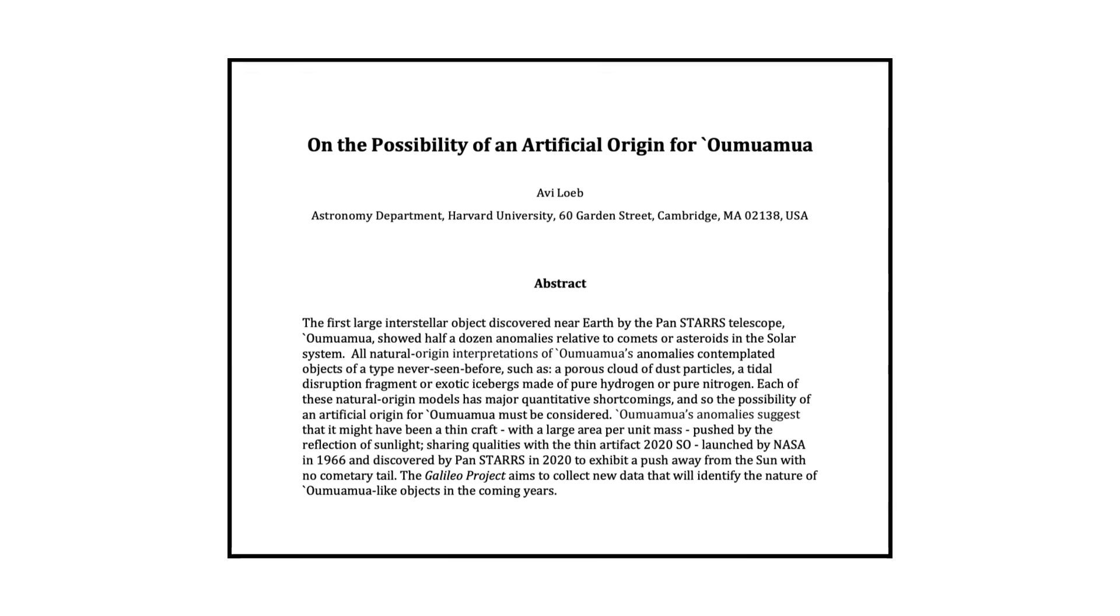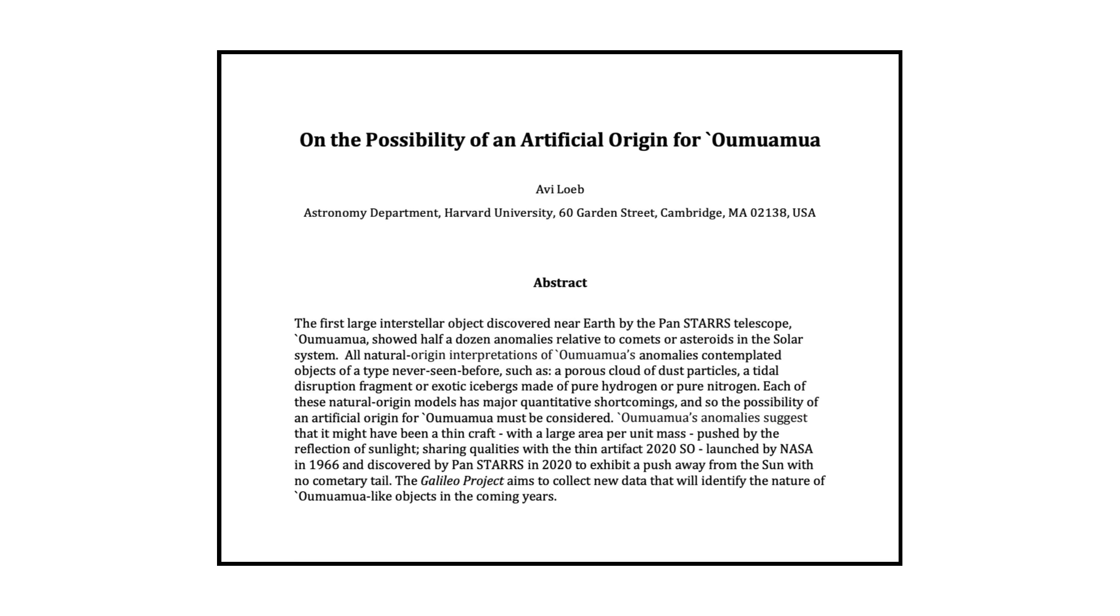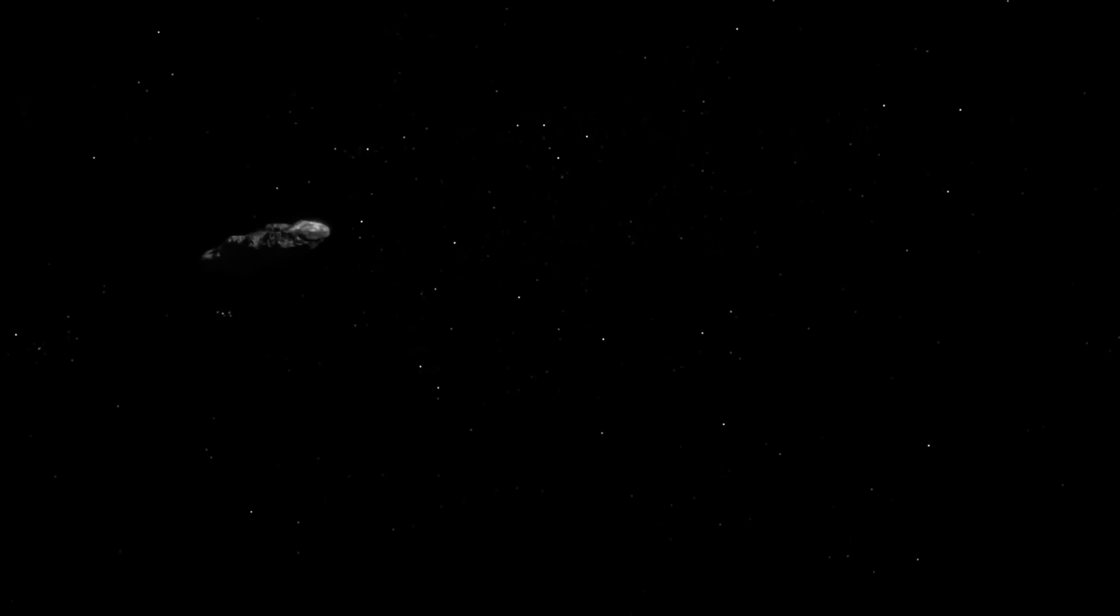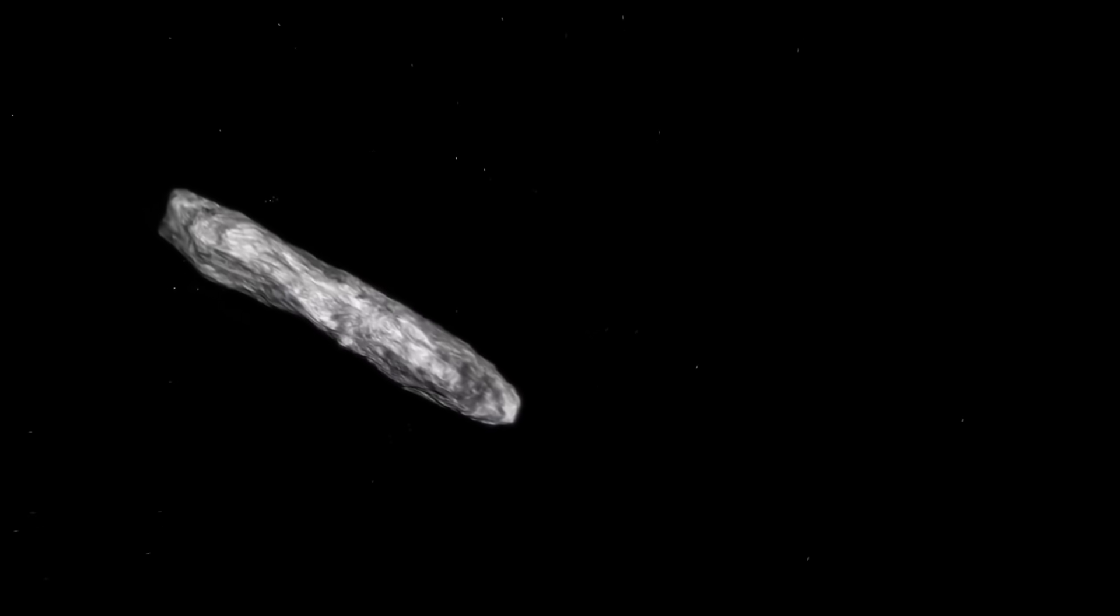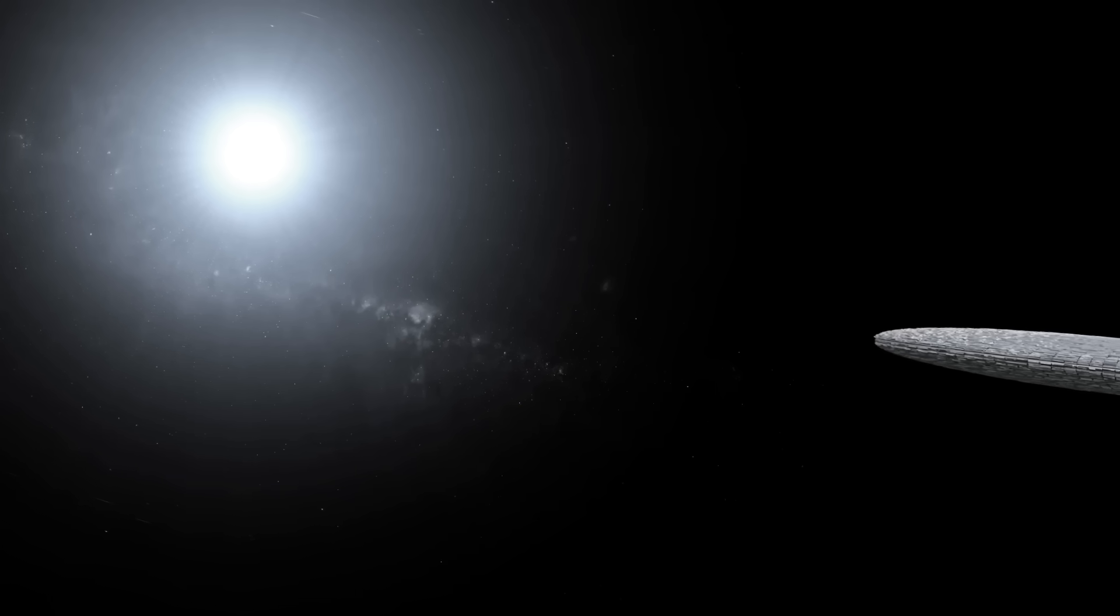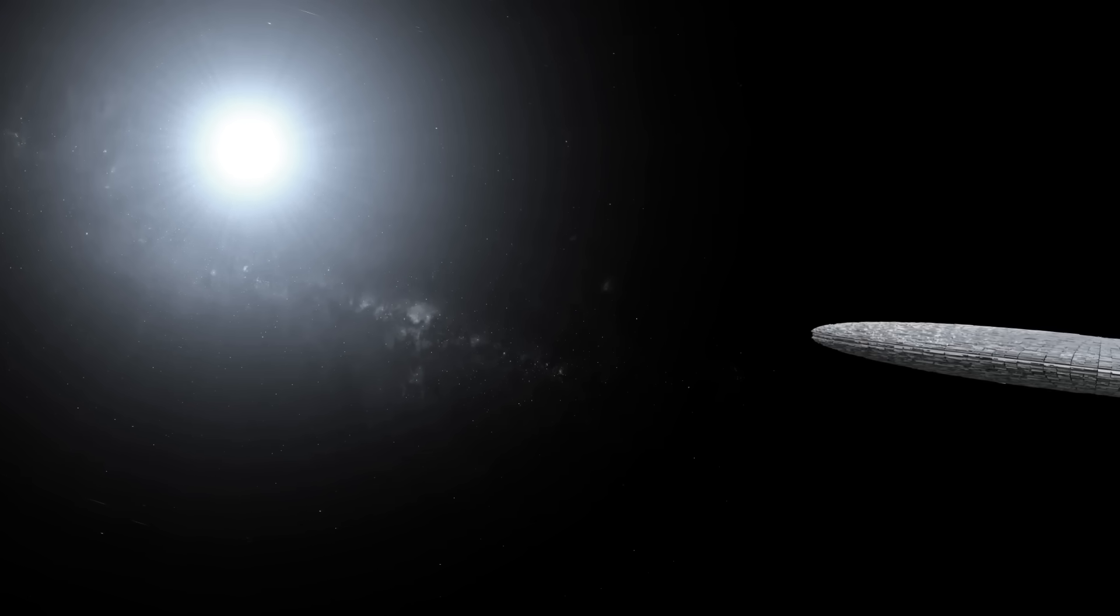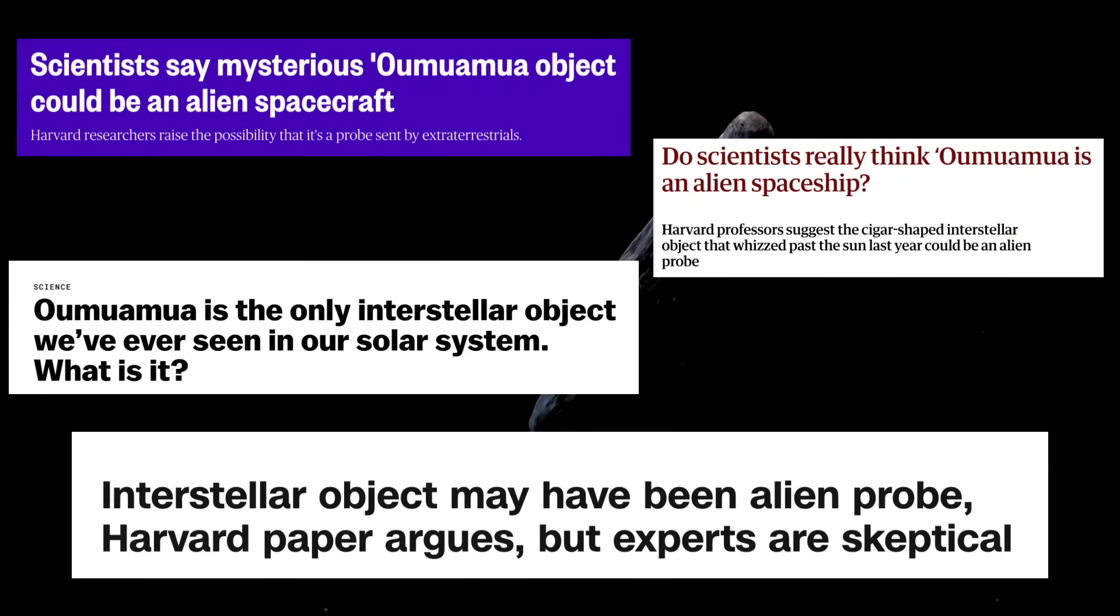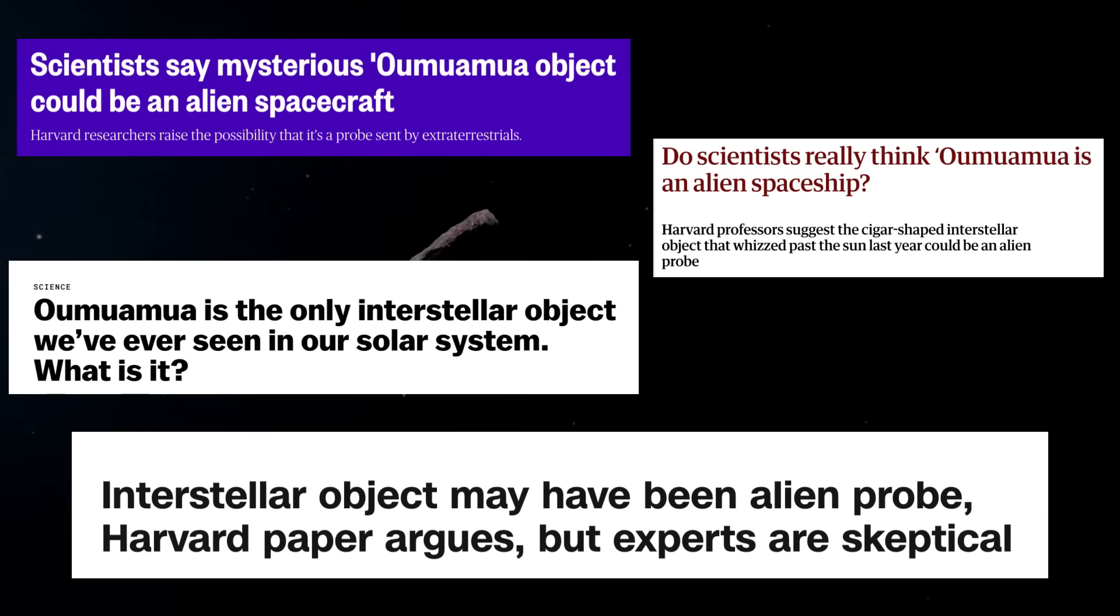In late 2018, Harvard's Avi Loeb and his team ran the numbers in a paper for the Astrophysical Journal Letters. Since no known natural process makes something like this, Loeb proposed a startling alternative. Perhaps we were looking at artificial light sail technology, a derelict probe or piece of spacecraft, sent from another star. Their bold hypothesis lit up headlines around the world. Some hailed it as open-minded science, others dismissed it as sensational.